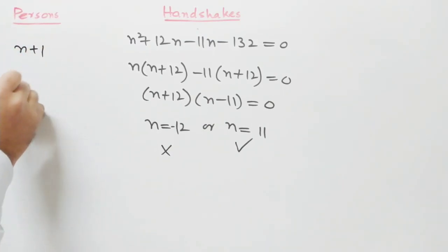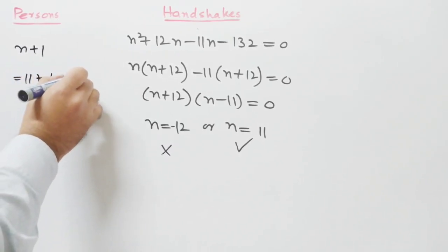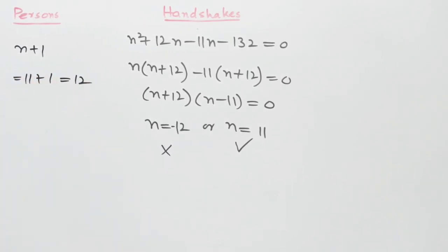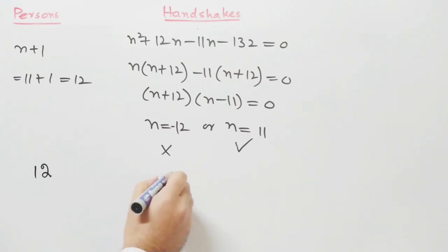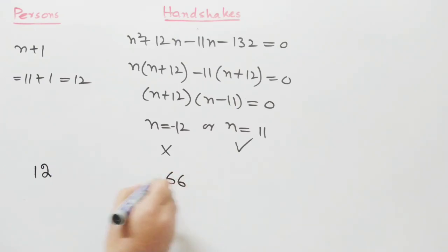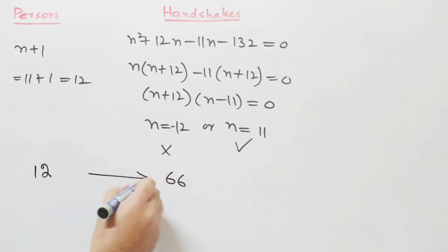We are finding the number of persons, so n is equal to eleven and we cancel the negative. So the number of persons is n plus one, which is eleven plus one, equal to twelve. The answer for this question is twelve. If we have twelve persons, there will be sixty-six handshakes.